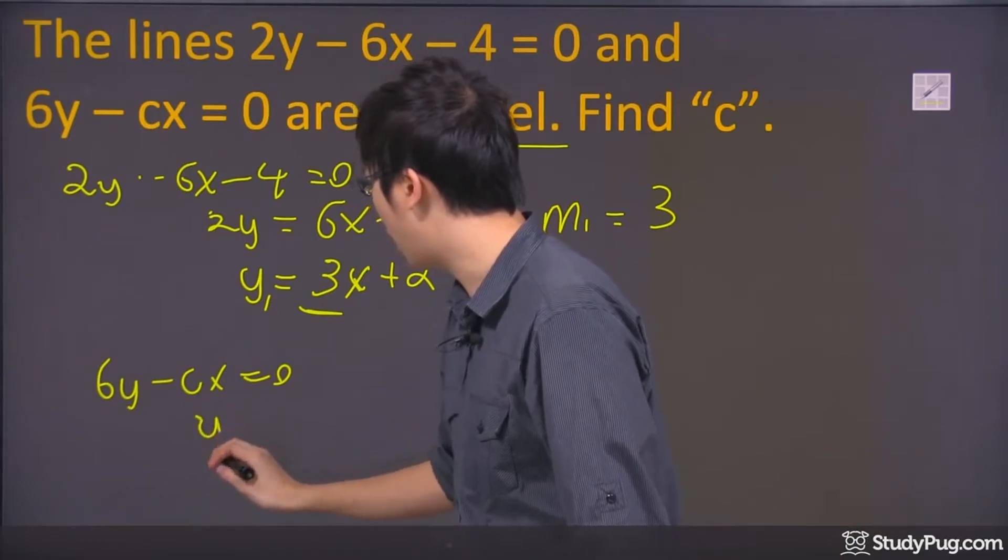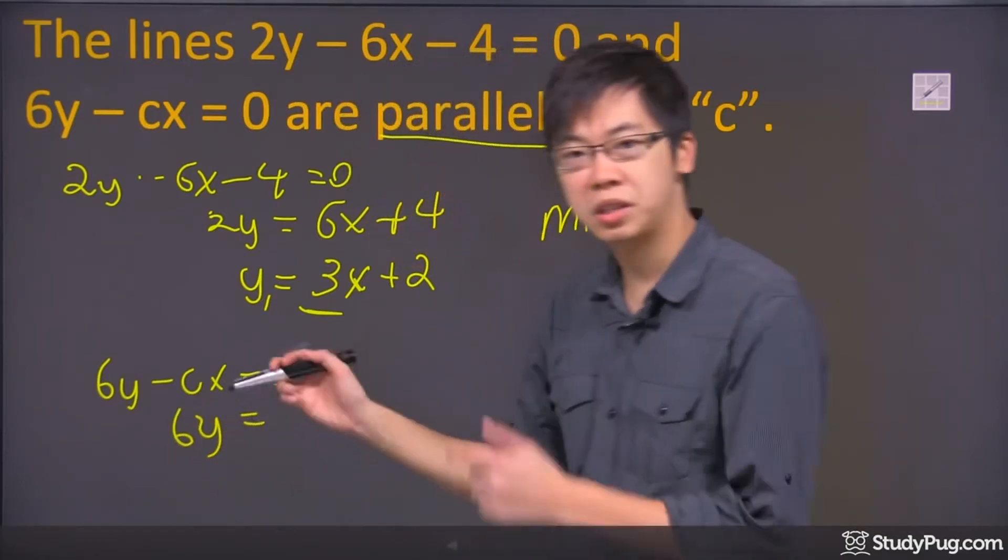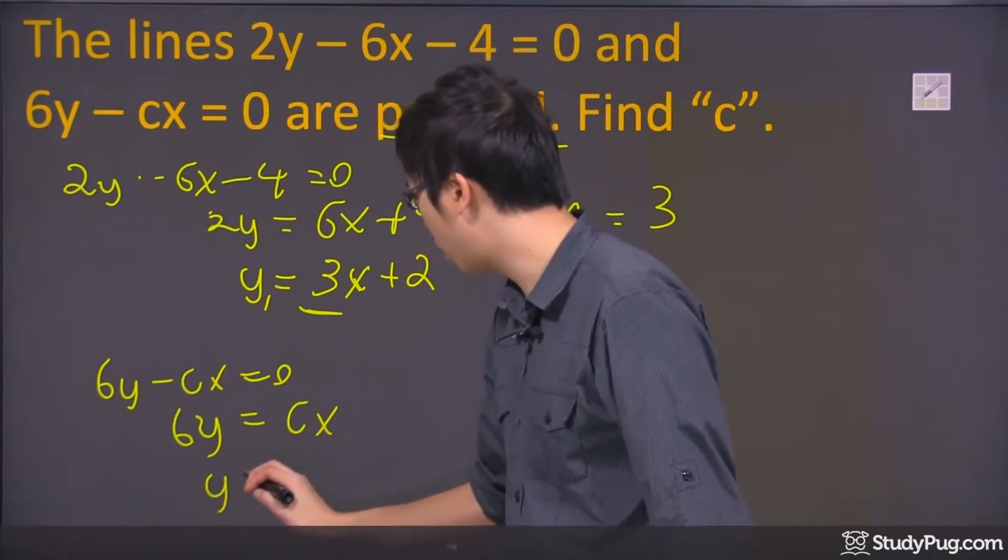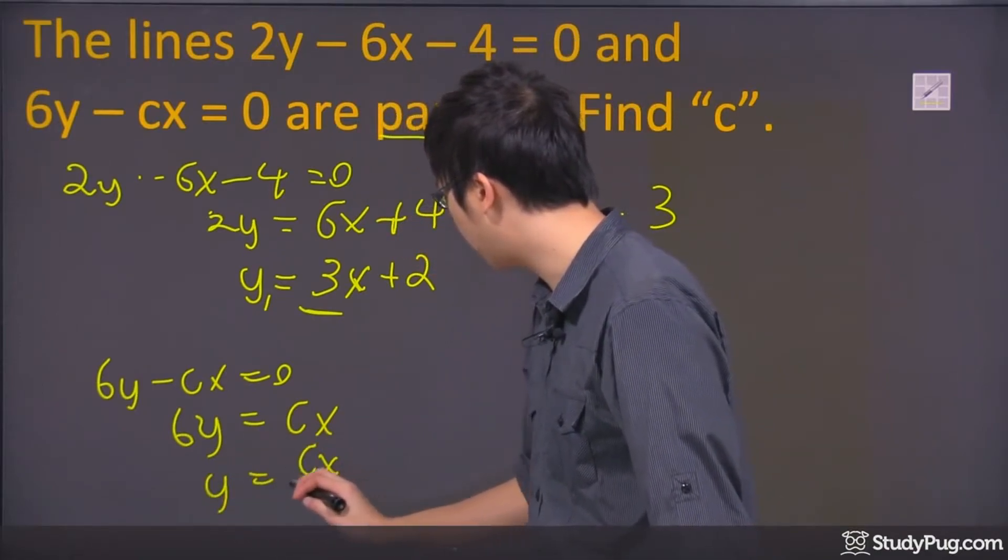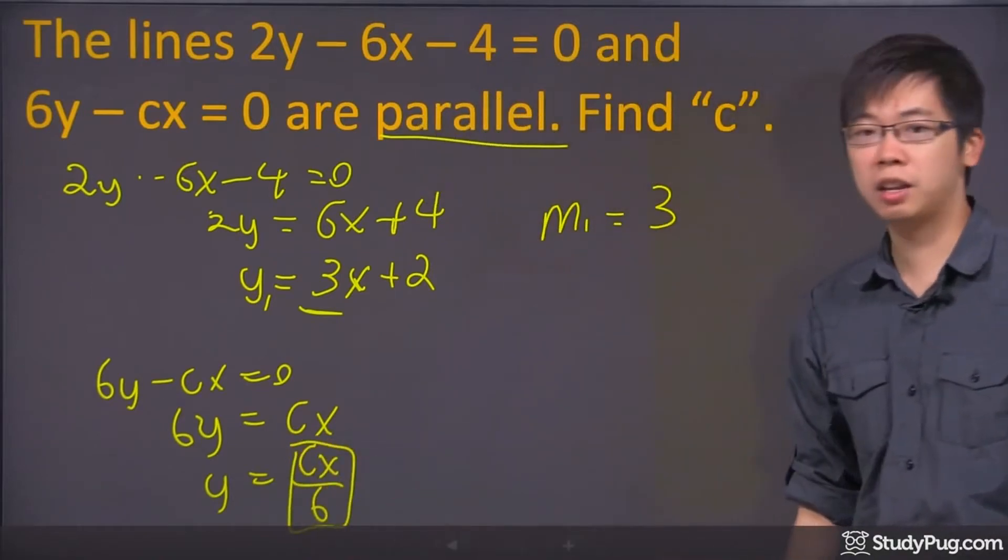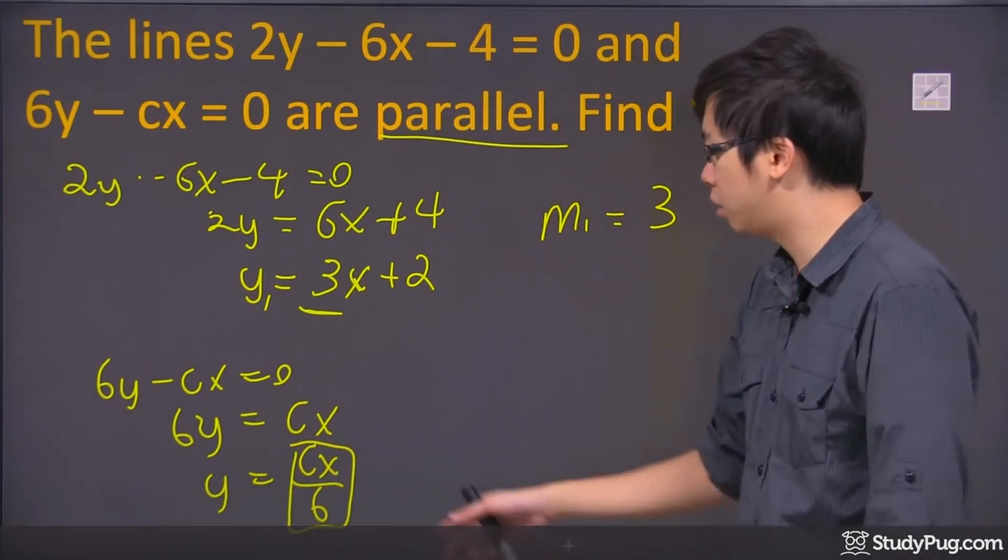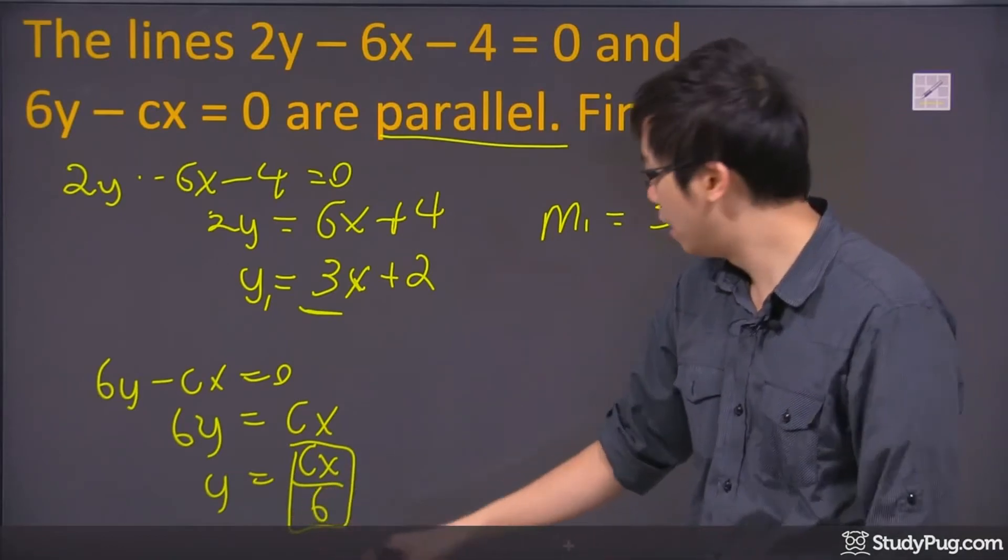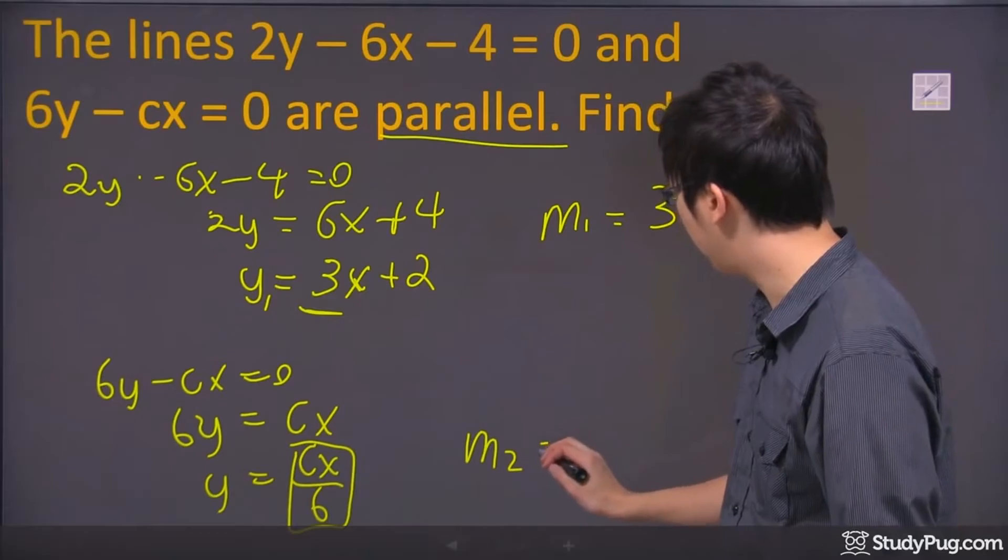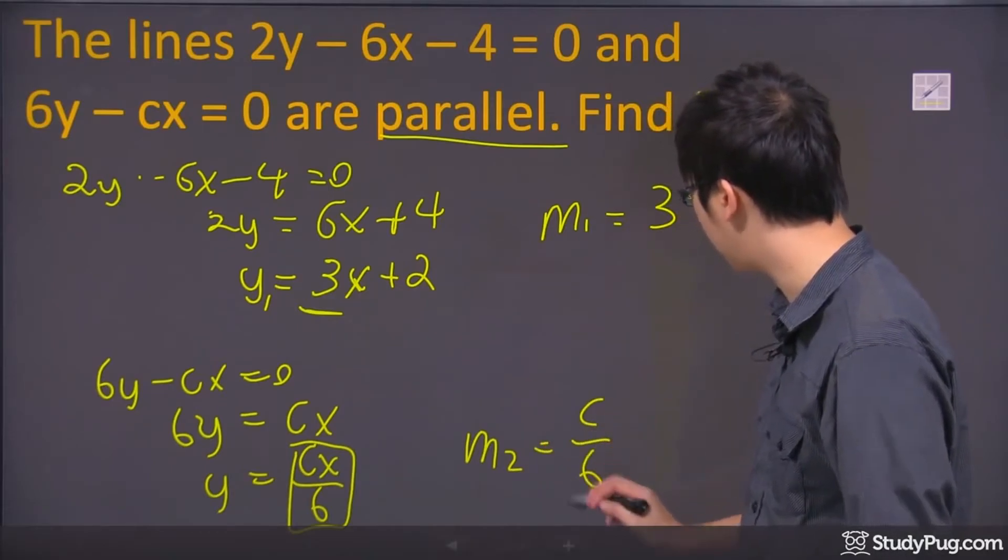So to solve for y, let's put 6y here, move the cx to the other side, becomes positive cx, and the y would just be cx over 6. That is actually the slope, believe it or not, because there is no intercept for this one right here. This c over 6, the slope of the second one is actually just c over 6.